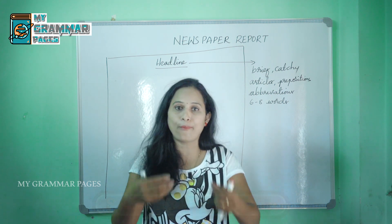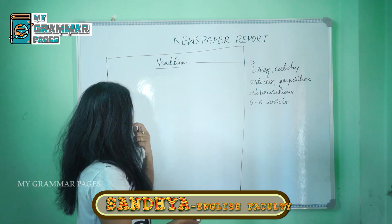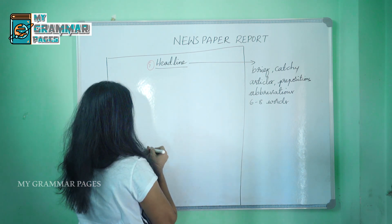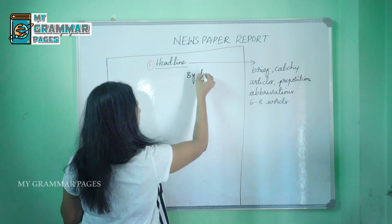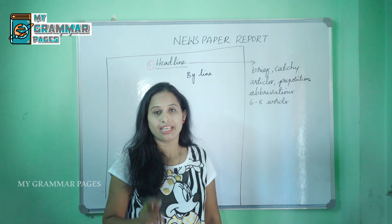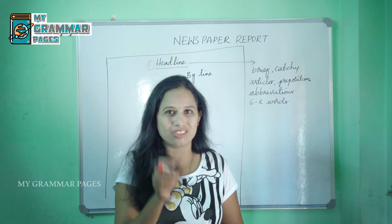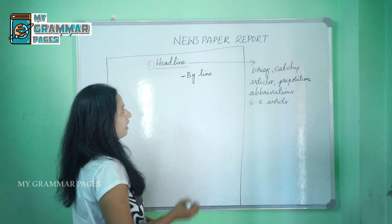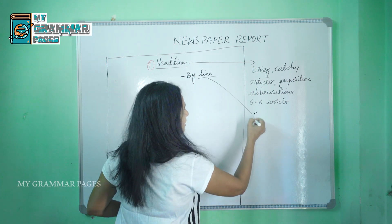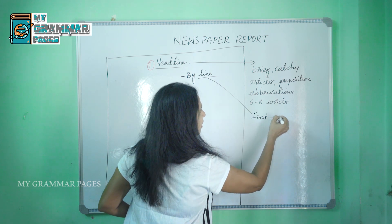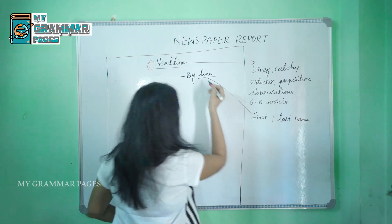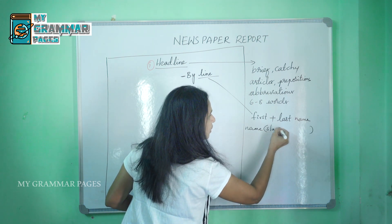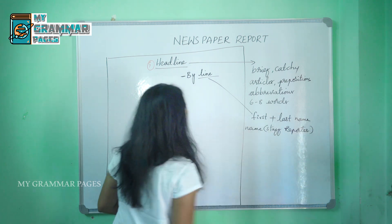When you look at the headline itself, you can understand what the news is going to be reported on. Coming to the second part, here comes the byline. The byline is a line which tells you about the writer or reporter by whom the news article has been given. You write a small hyphen, the word 'by', followed by the first and last name of the person, and in brackets, write either 'staff reporter' or 'ground reporter'.